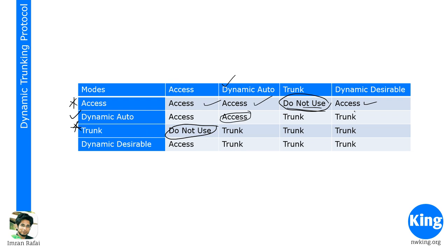If both sides are dynamic desirable, they will obviously form a trunk. Dynamic desirable means as soon as a wire is connected, that port proactively starts negotiating a trunk. Dynamic auto, by contrast, waits for somebody else to start the negotiation. So if both sides are dynamic auto, nobody initiates and no trunk is ever formed. But if both are dynamic desirable, both negotiate and a trunk forms.